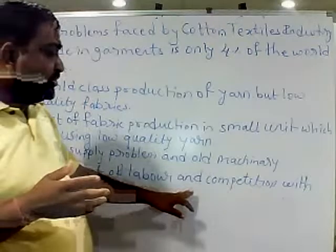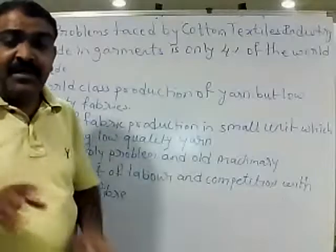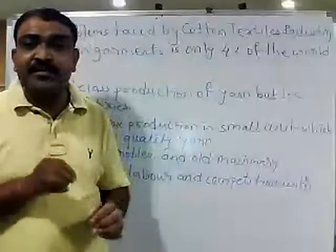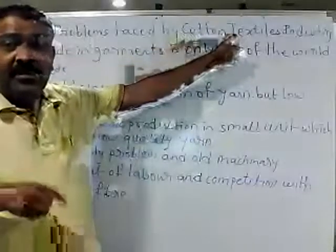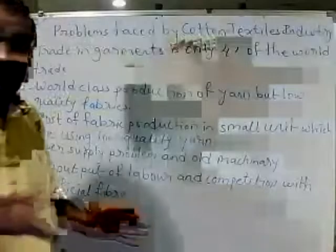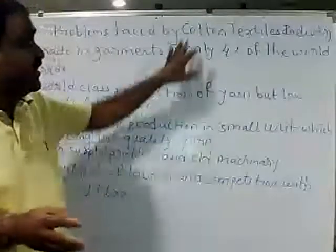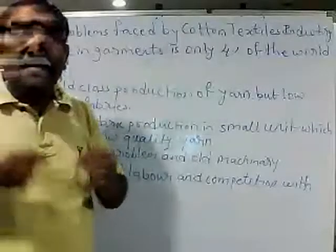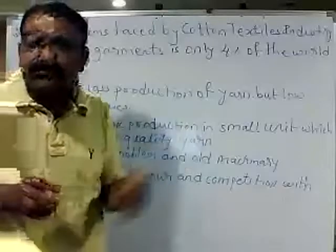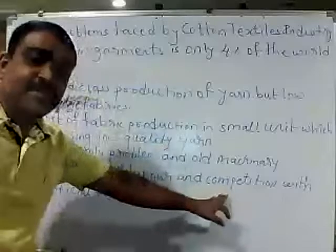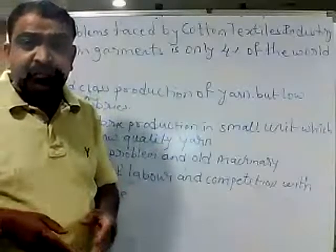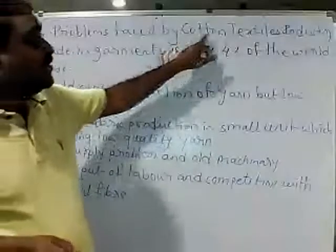The last issue is competition with artificial fiber. Artificial fibers — such as terricot and polyester — have a very less cost of production. Because their cost of production is very low, artificial fiber garments sell more. Cotton textile is comparatively costly. A good quality cotton T-shirt costs around 1,000 rupees, which not everyone can afford. But the same garment manufactured with artificial fiber costs only 300 to 400 rupees. So these are the major issues faced by the cotton textile industries.